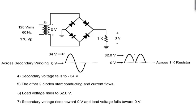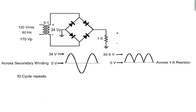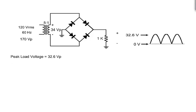Finally, the secondary voltage will return to 0, and the load voltage falls to 0. Then the cycle repeats, producing a pulsed DC voltage with a peak amplitude of 32.6 volts.